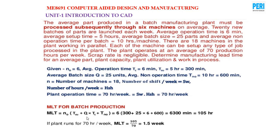MLT for batch production: MLT equals N0 · (Tsu + Q · Tc + Tn0) equals 6 × (300 + 25 × 6 + 600) equals 6 × 1050 equals 6300 minutes, which is 105 hours. Since the plant runs 70 hours per week, MLT equals 105 / 70 equals 1.5 weeks. This means the firm requires 1.5 weeks to complete the manufacturing lead time.